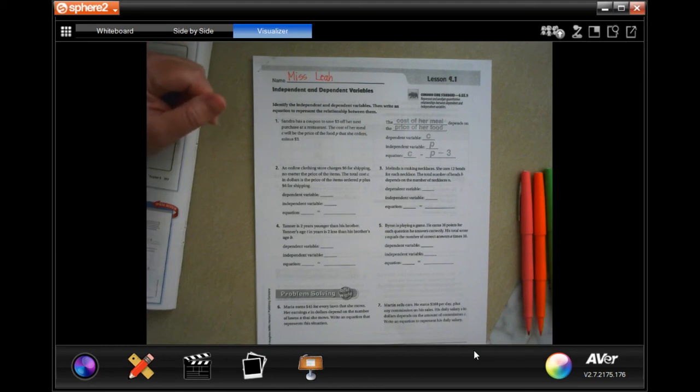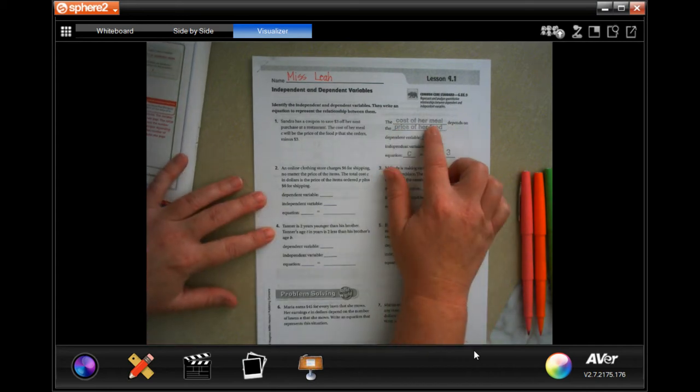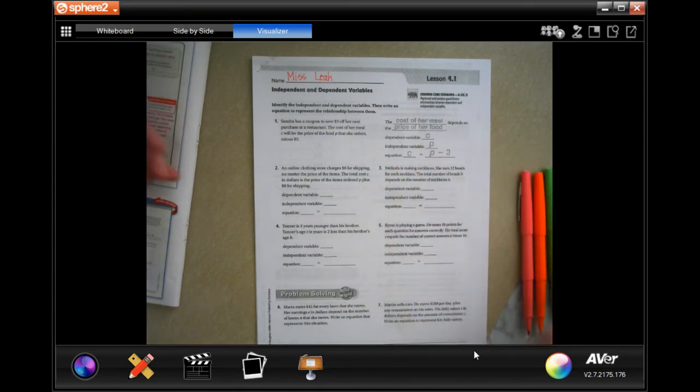Hey y'all, welcome to 6th grade, Chapter 9, Lesson 1. We're going to go ahead and get started. We're talking about independent and dependent variables.